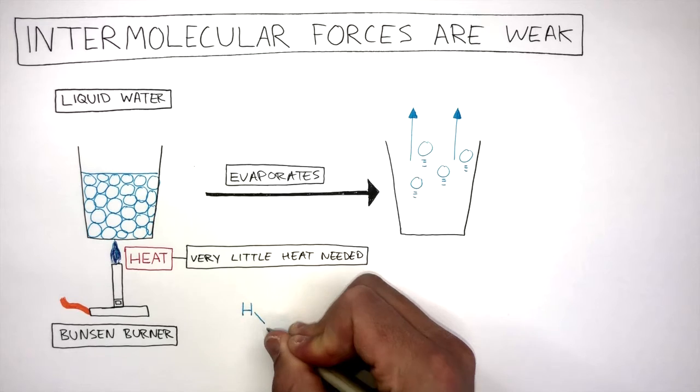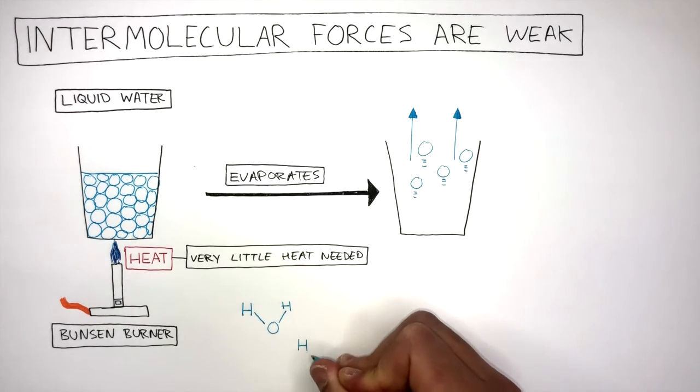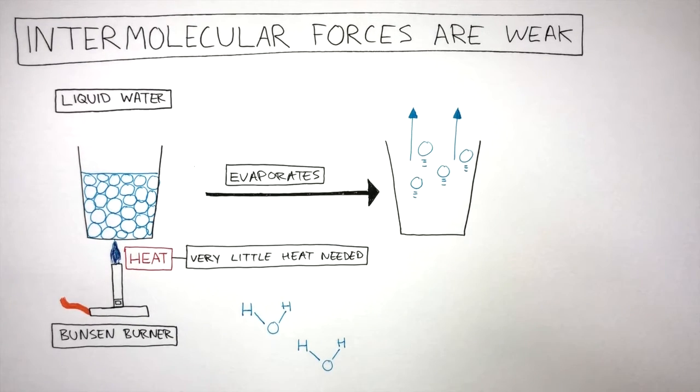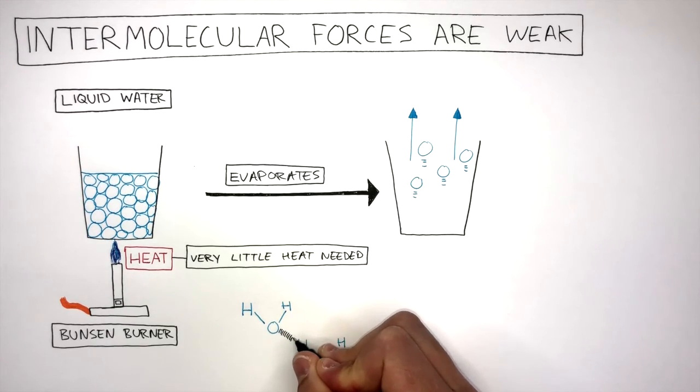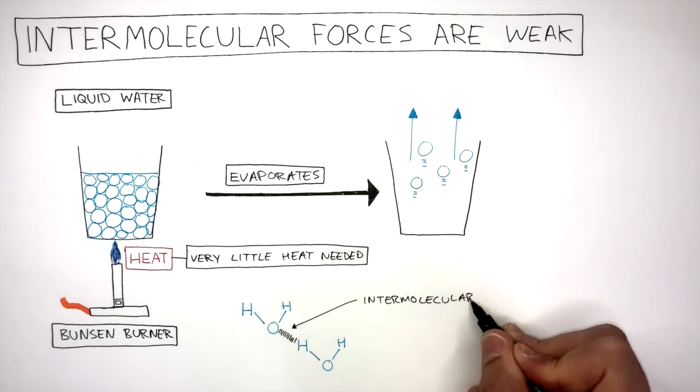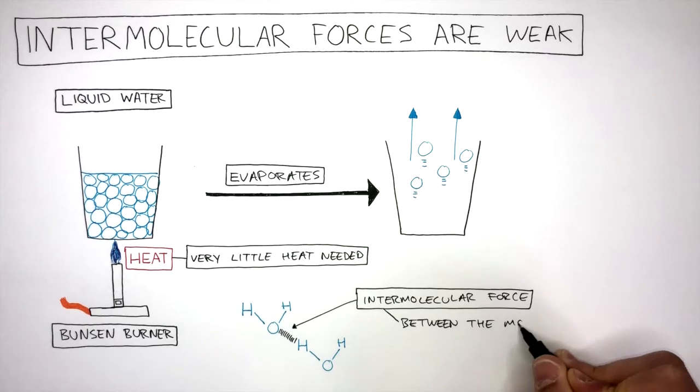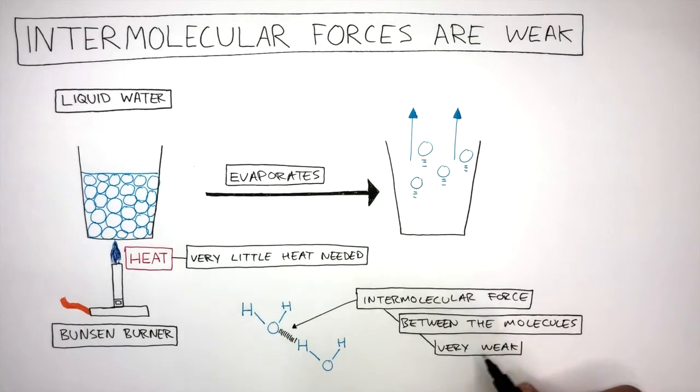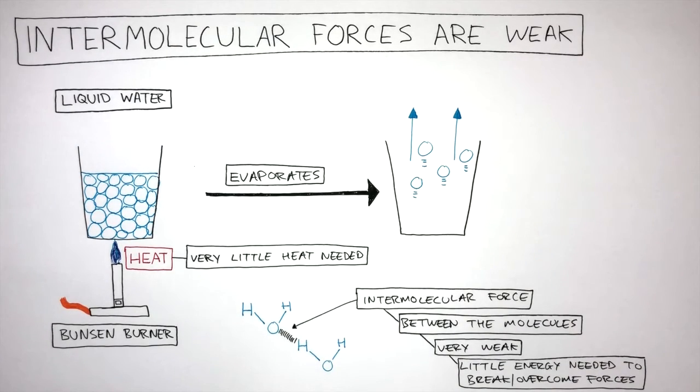Here is a structural formula of two water molecules. These are two distinct molecules where the lines represent single covalent bonds between the atoms. These lines represent the intermolecular forces between the molecules. They are very weak so need little energy to break or overcome these forces. It is this reason that simple molecular substances all have low melting and boiling points.